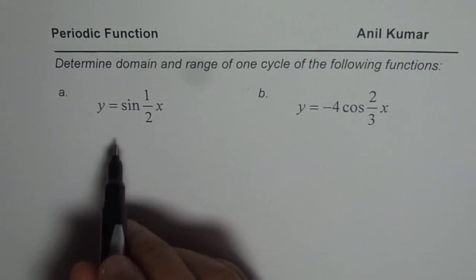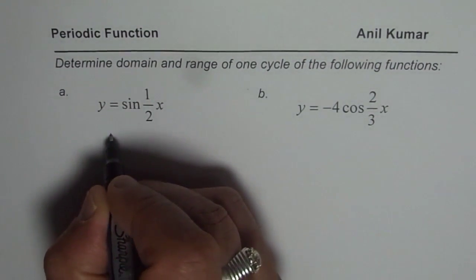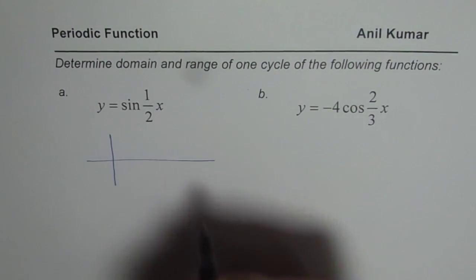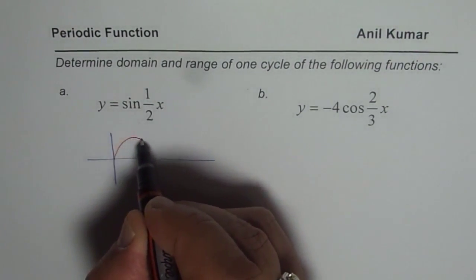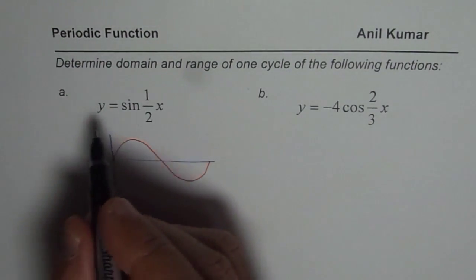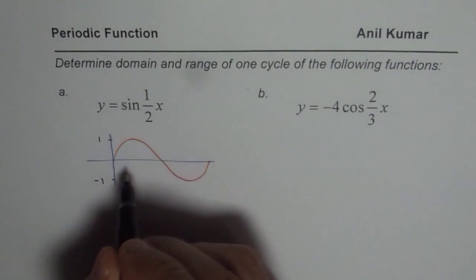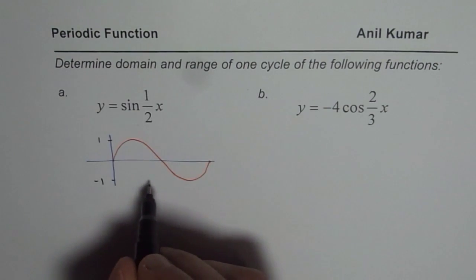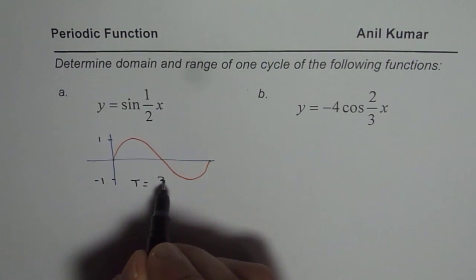Let's begin with the very first one which is y equals sine of half x. For this function, what is the domain and what is the range? Let's begin by graphing this function, where the amplitude is going to be 1, so the maximum is 1 and minimum is minus 1.